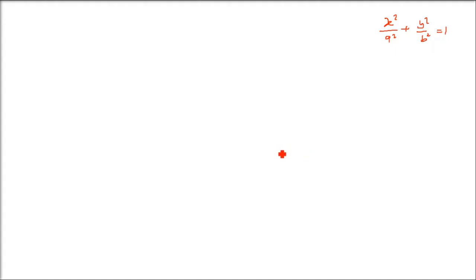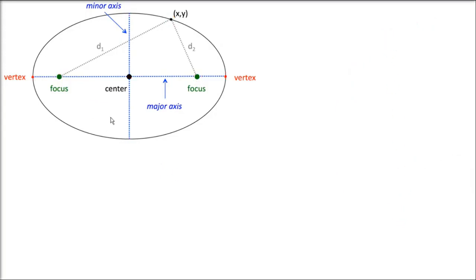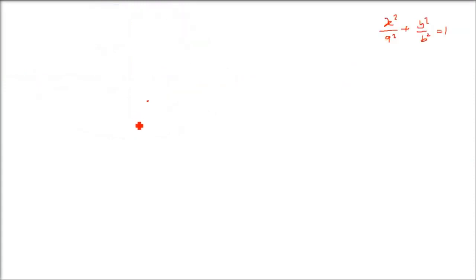We will use the definition only. A point is moving such that the ratio of its distance from a fixed point to its distance from a fixed line equals e, and e is less than 1 in this case. We need two things to find the expression: the distance of the point from the directrix, and the distance of the point from the focus. Take the ratio, set it equal to e (the eccentricity), which is a constant.